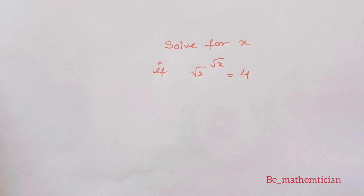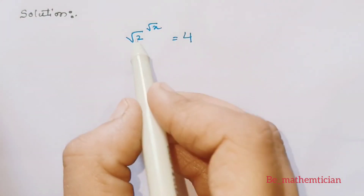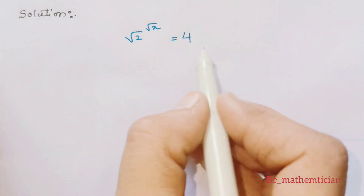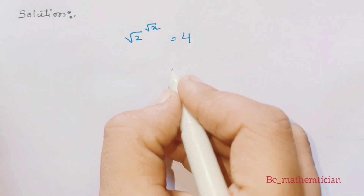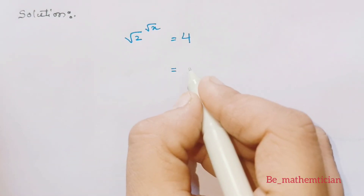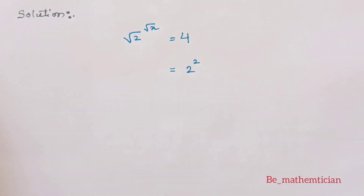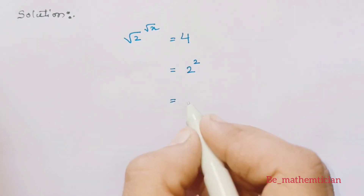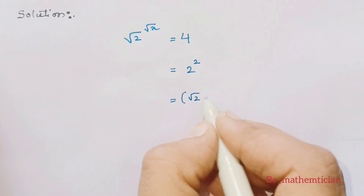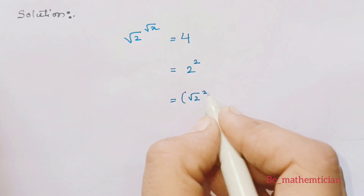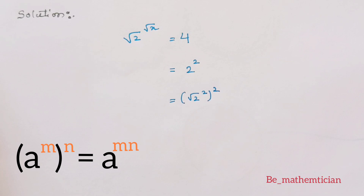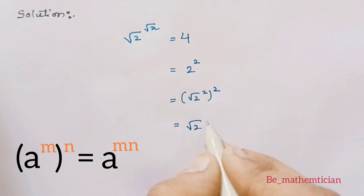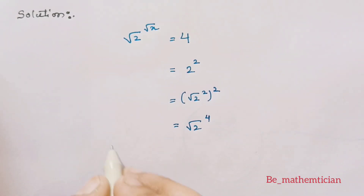There can be many ways to solve this equation, but here we try to make our RHS in the form of LHS. We know 4 is equal to 2 squared, and also 2 squared can be written as root 2 squared, the whole squared. Now by applying the power of power law of exponents, we can write this as root 2 raised to 4.